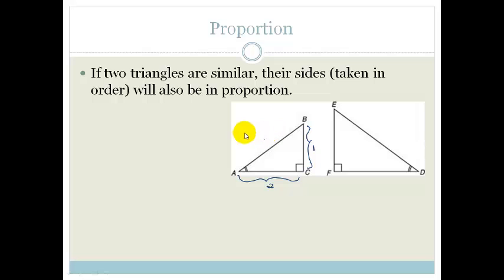This side here would be the square root of 2 squared plus 1 squared, which is the square root of 5.